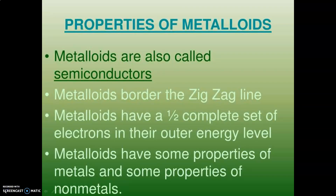After metals and nonmetals, the third category is metalloids. The word itself shows it is a combination of metal and nonmetal — a metalloid has properties of both metals and nonmetals. Metalloids have a half-complete set of electrons in the outer energy level and are generally hard solids. Examples include boron, silicon, germanium, arsenic, antimony and tellurium.